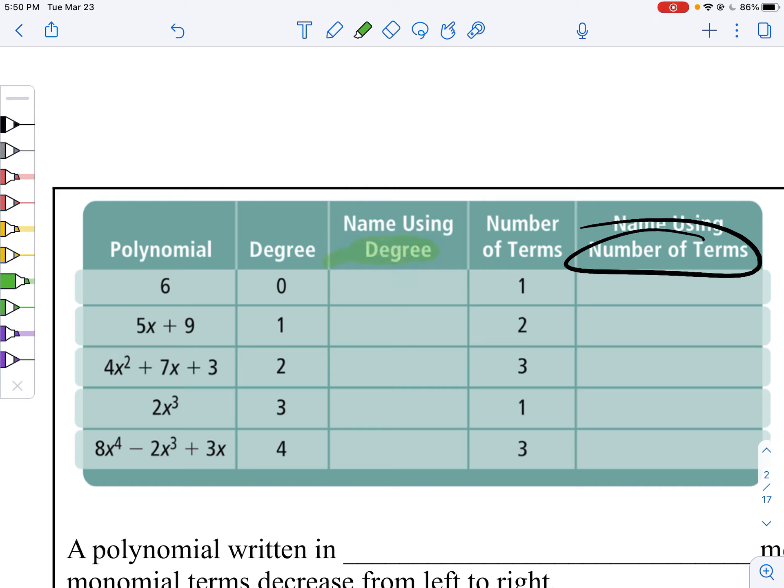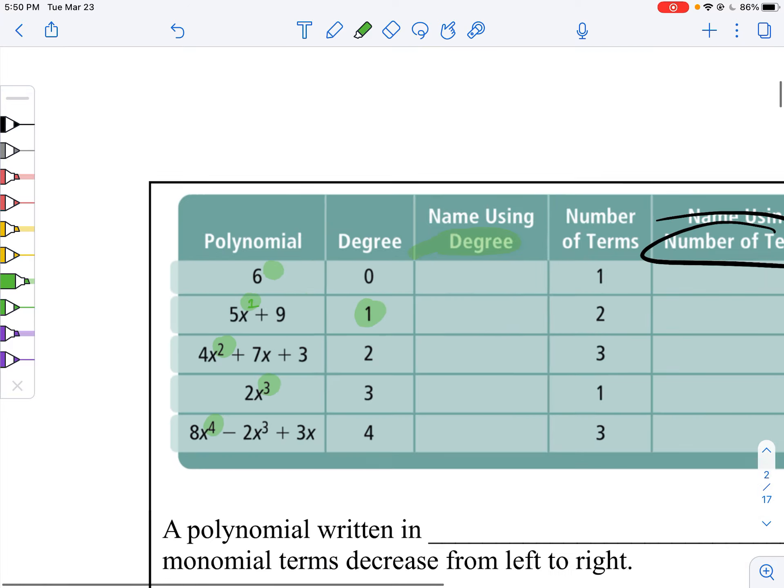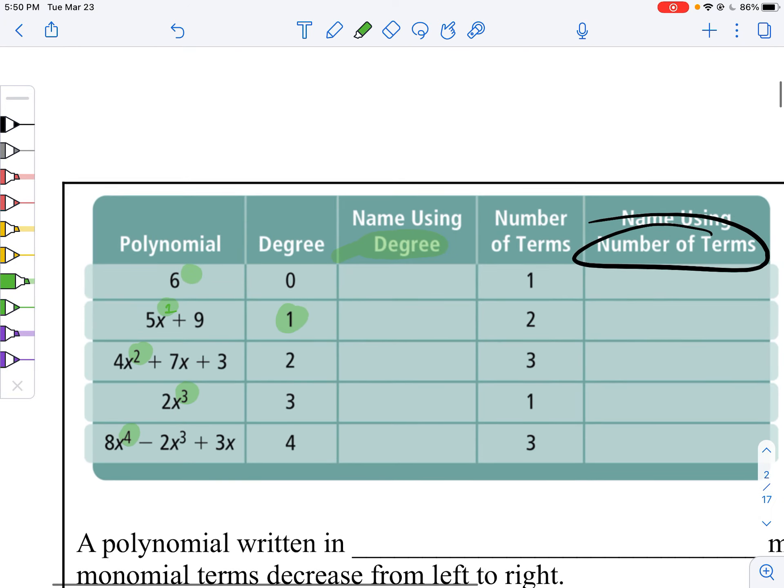You can classify it by the degree or by the number of terms. We've already talked about degree a little bit. Degree is going to be the highest exponent. Here there is no exponent. It's just zero. Here the exponent is like one. Highest exponent two. Highest exponent three. Highest exponent four. Be careful because you don't always have the biggest exponent out in front. We happen to have it this way. We call that standard form.